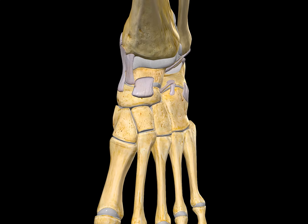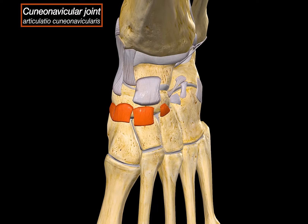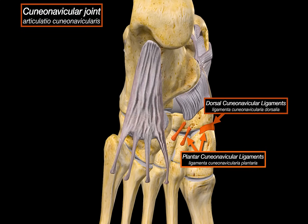Next, between the navicular and the three cuneiform bones — medial, intermediate, and lateral — is the cuneo-navicular joint. This joint is held together by dorsal cuneo-navicular ligaments on the top side, and plantar cuneo-navicular ligaments underneath, anchoring the navicular to each of the cuneiform bones.